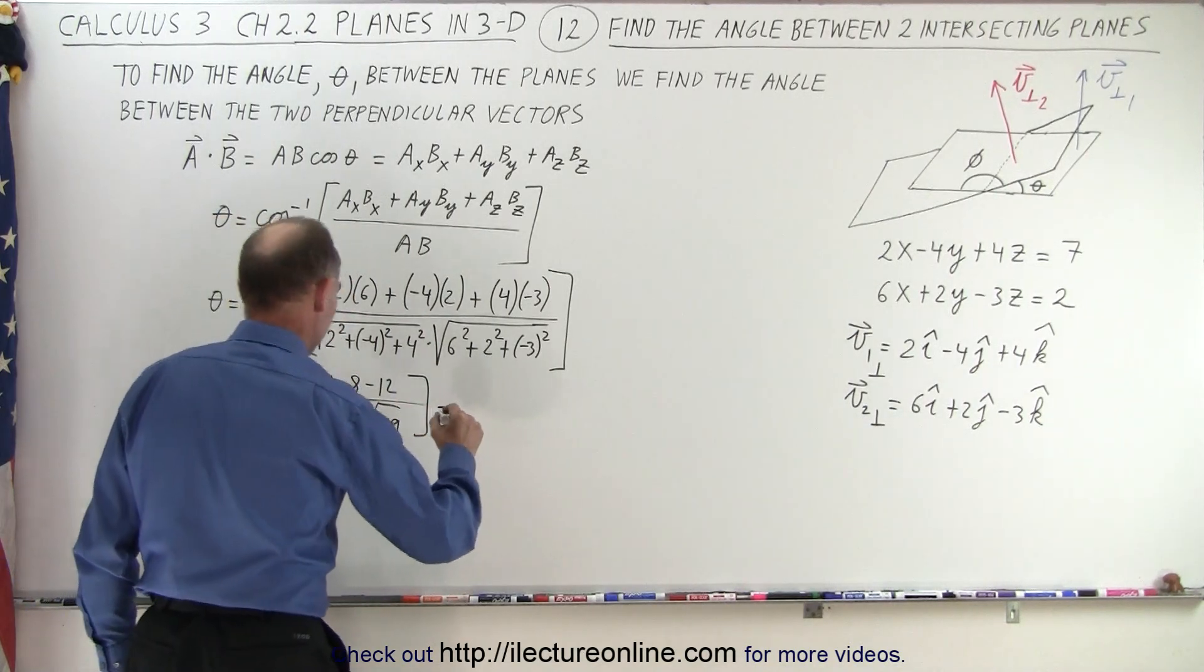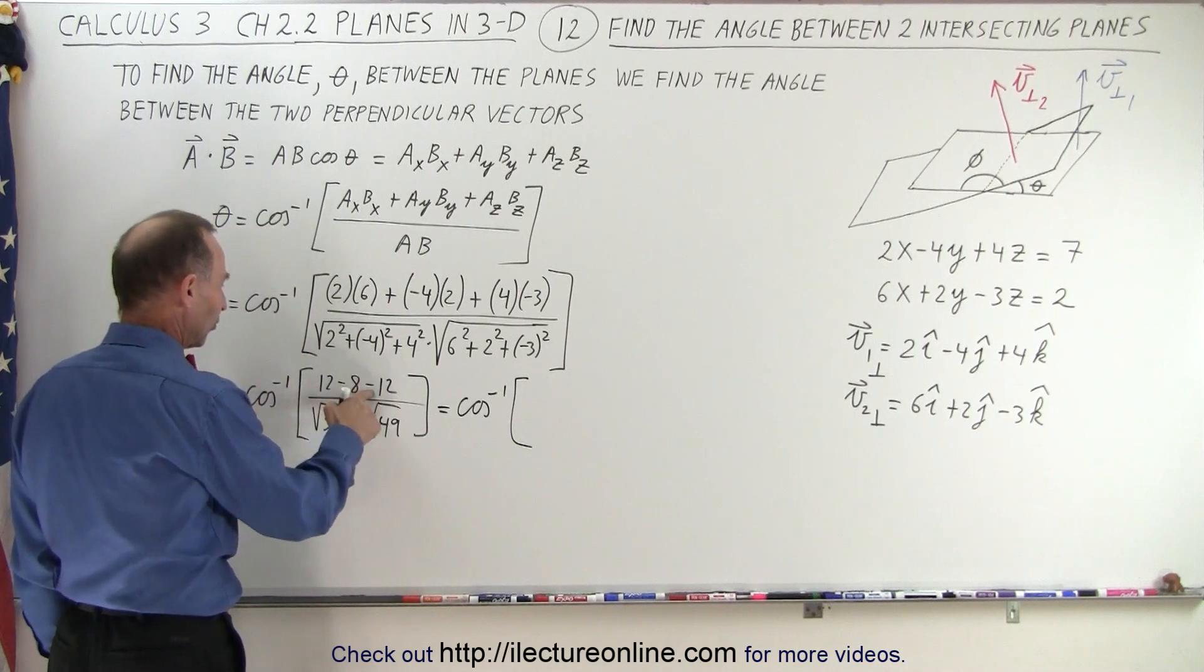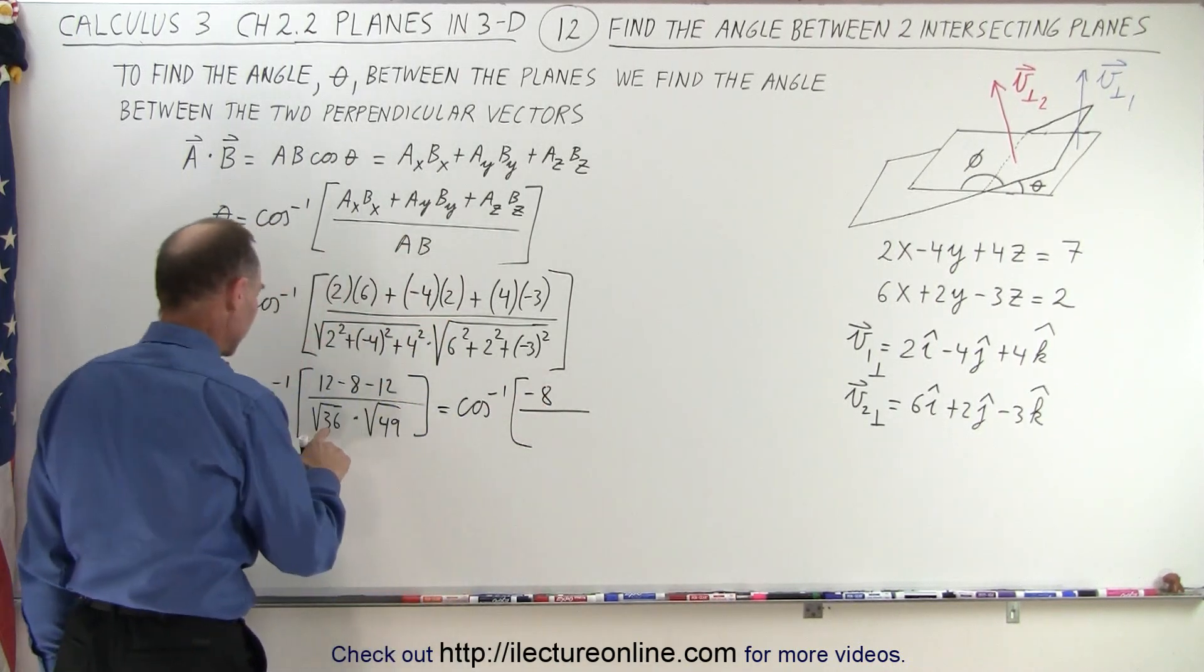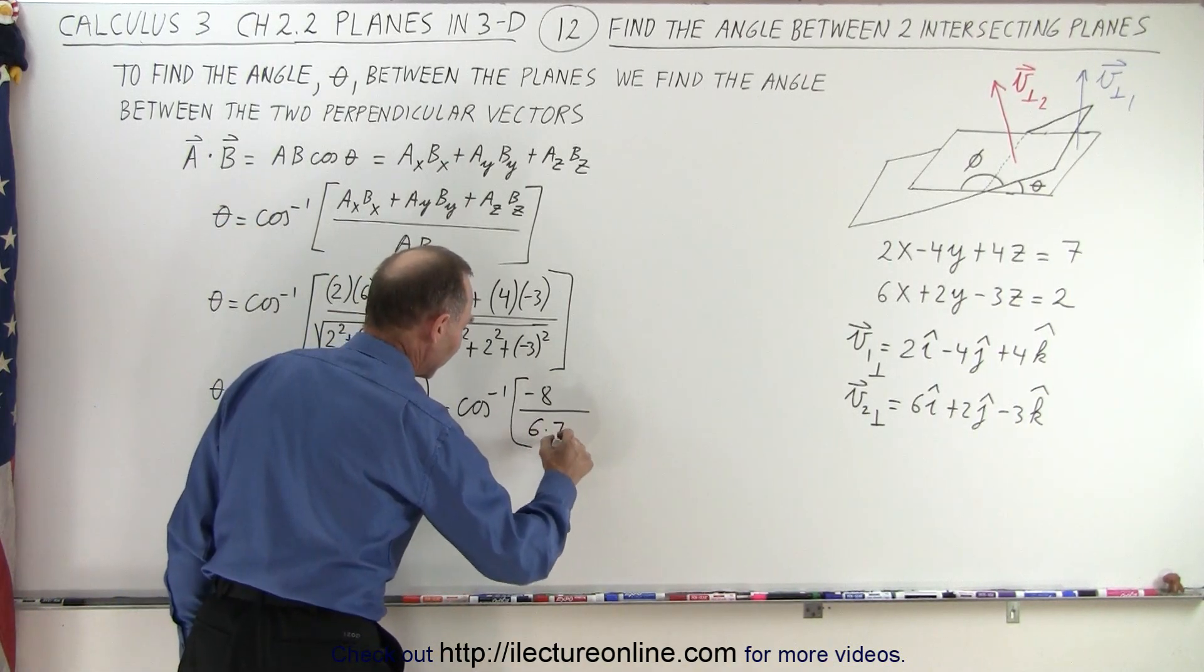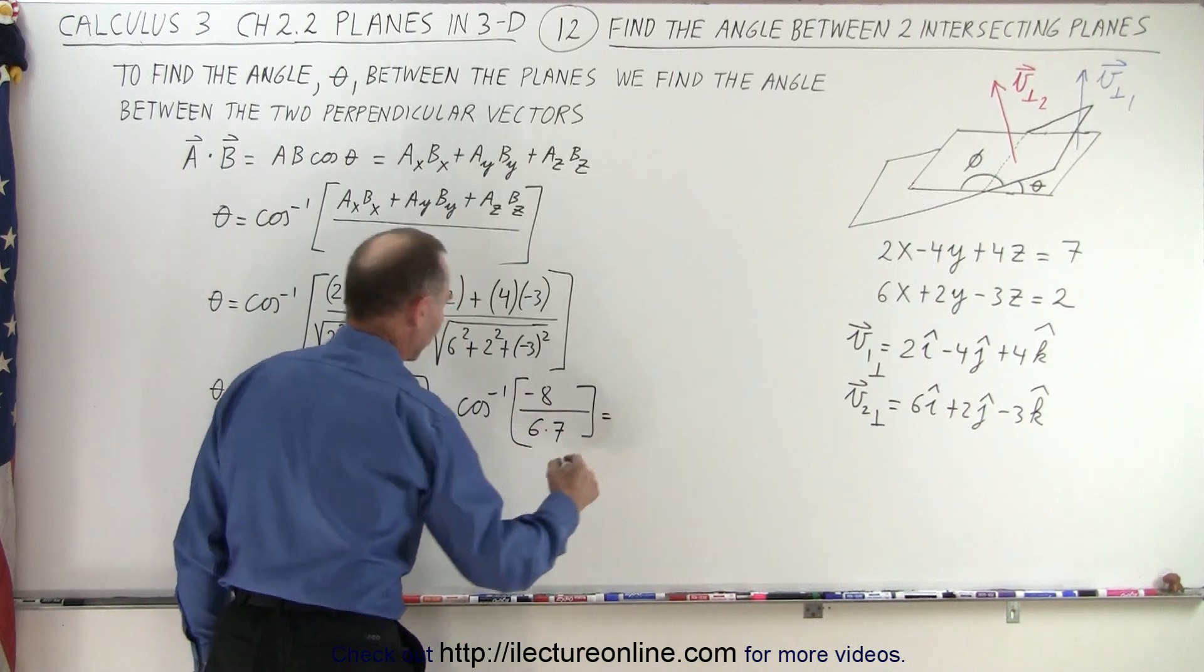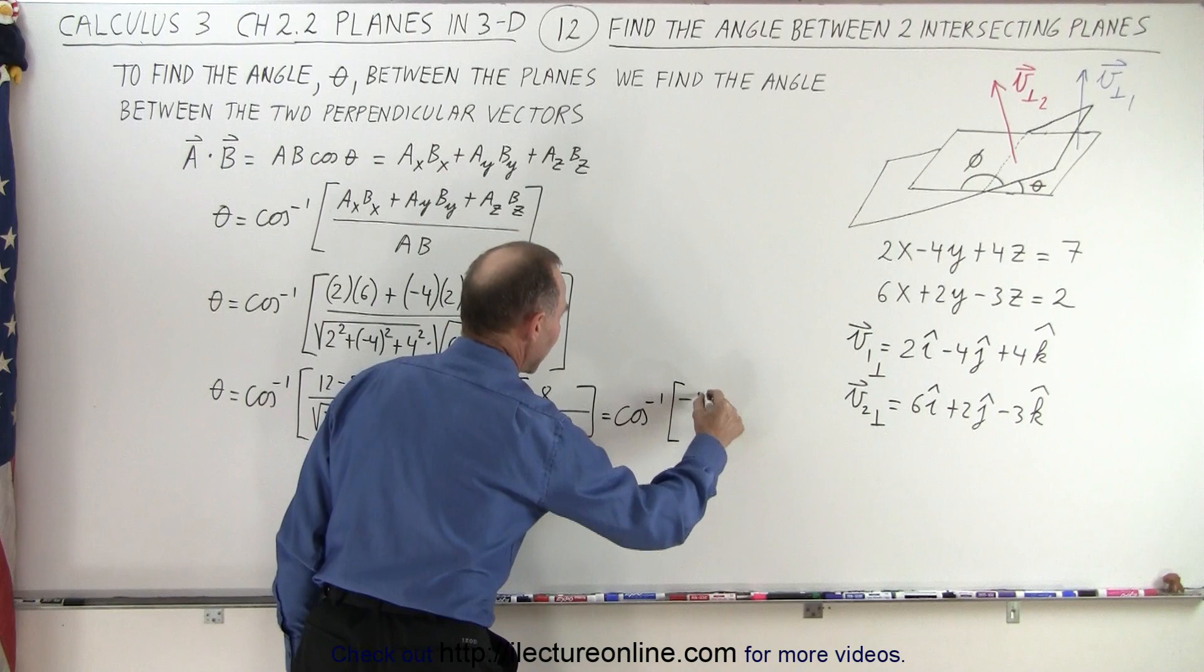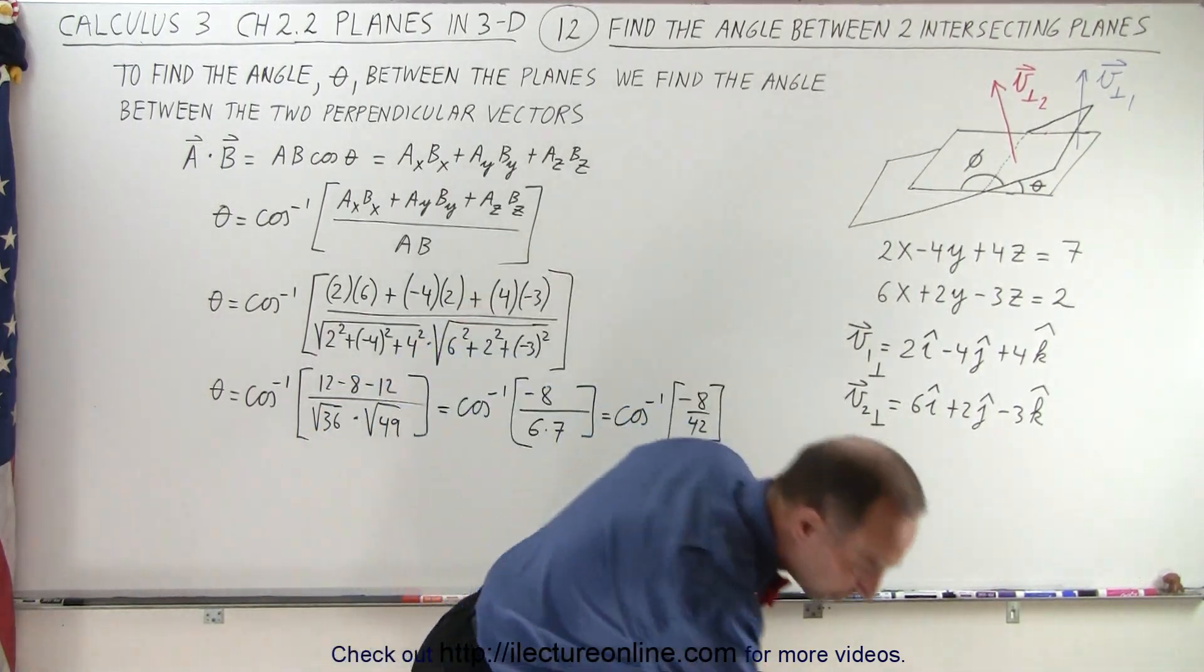Okay, this is equal to the inverse cosine of—12 minus 12 is 0, we get minus 8—and we divide that by the square root of 36 which is 6, times the square root of 49 is 7, 6 times 7, which is equal to the inverse cosine of negative 8 over 42. All right, let's see what that's equal to.